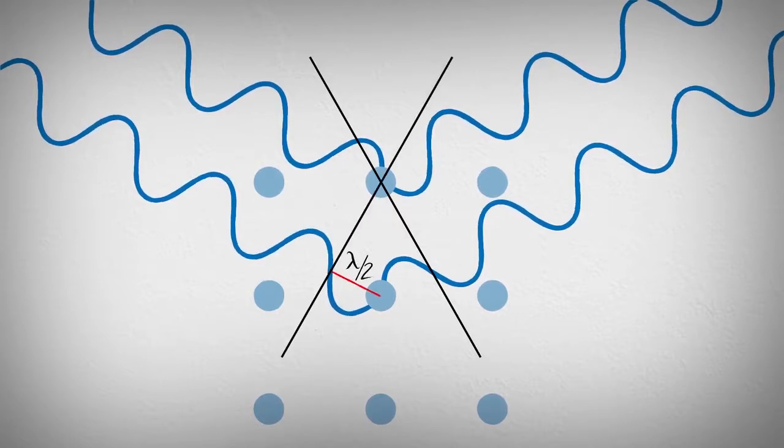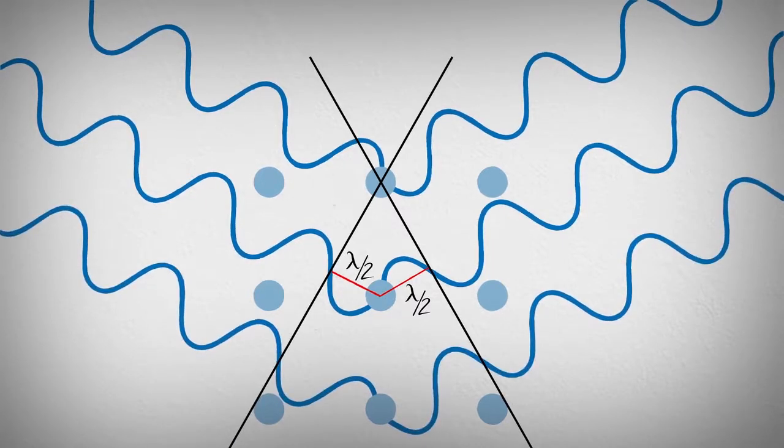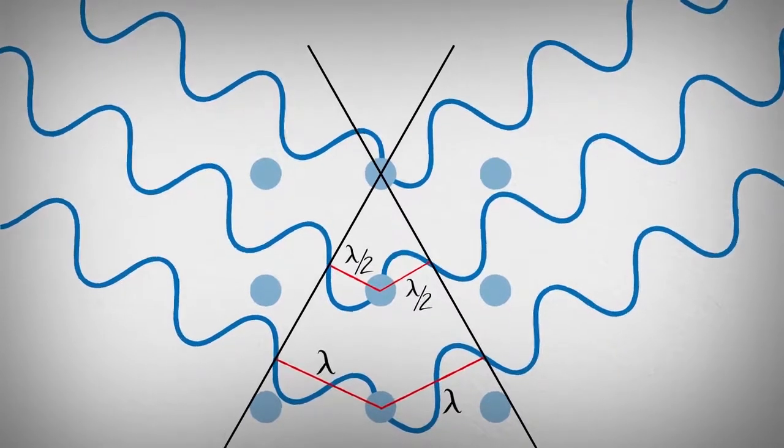In this case, one half of a wavelength is traveled on the incident side and one half on the scattered side, yielding one additional wavelength. In the case of the next X-ray, one wavelength is traveled on both the incident and the scattered side, resulting in two wavelengths. This reinforcement occurs throughout the crystal.